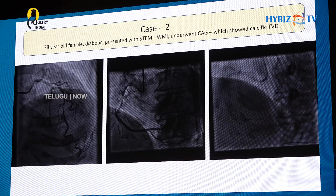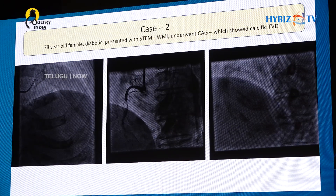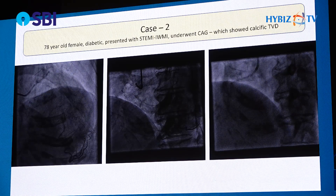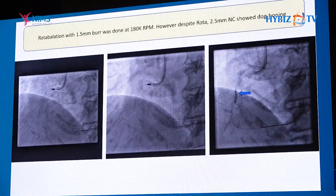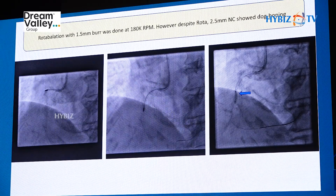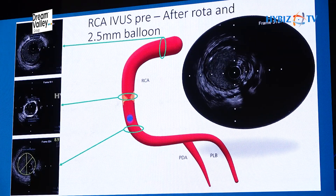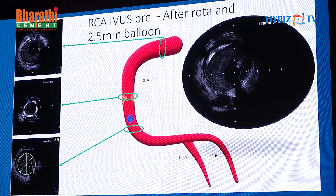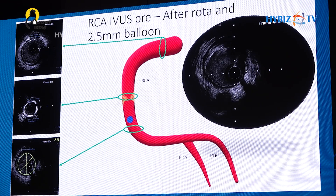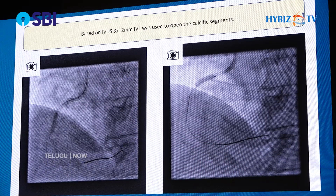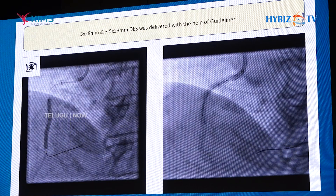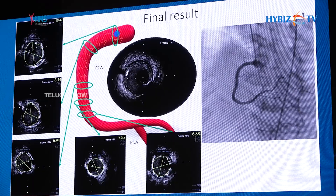Briefly, a second case: a 78-year-old female who presented with STEMI. The lesion looked like a simple juicy lesion, but nothing was crossing — not even a CTO balloon with a guideliner. Rotational atherectomy was performed, but after ROTA the NC balloon was not opening and there was significant dog-boning. IVUS imaging after ROTA showed significant 360-degree calcium still remaining, so IVL was added. Combining modalities helped tackle this complex lesion, and the final results were good.